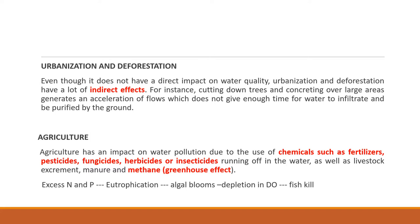As algae bloom and grow, they fill the entire surface of the water body, preventing oxygen from penetrating inside. The dissolved oxygen level starts depleting to such an extent that fish in the water start dying because there is no oxygen for their survival — leading to a massive fish kill. Indirectly, a fish kill in a water body tells you it is because of eutrophication or excess nitrogen and phosphorus in the water.